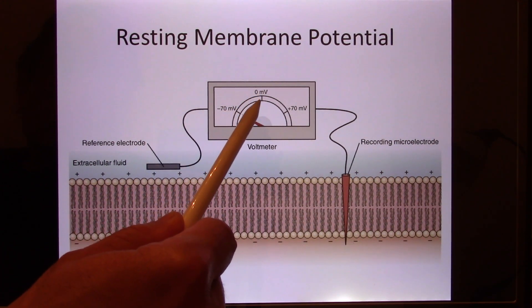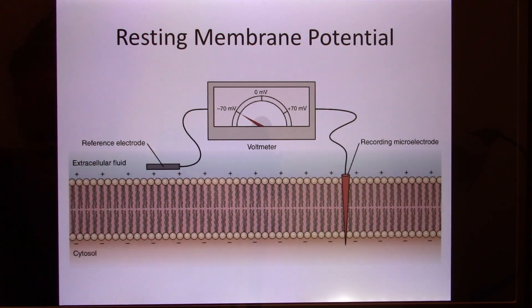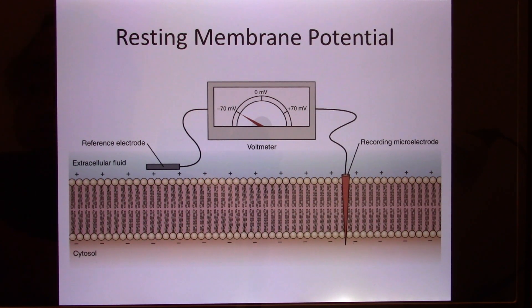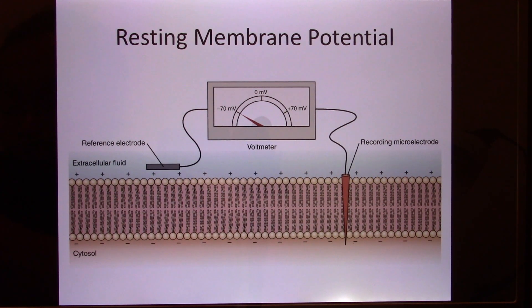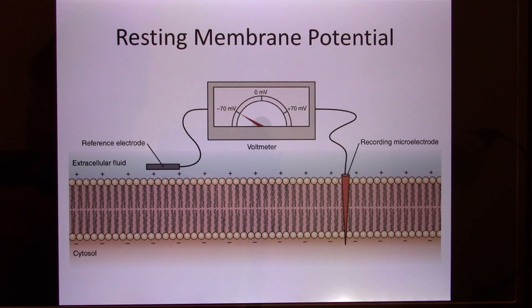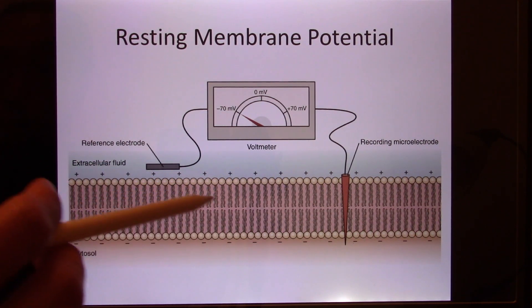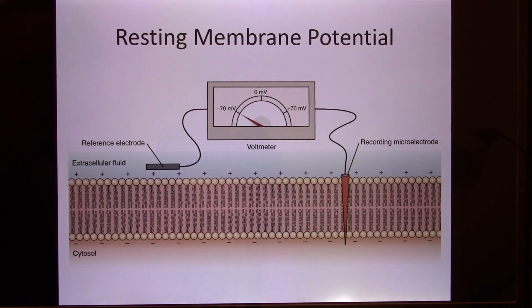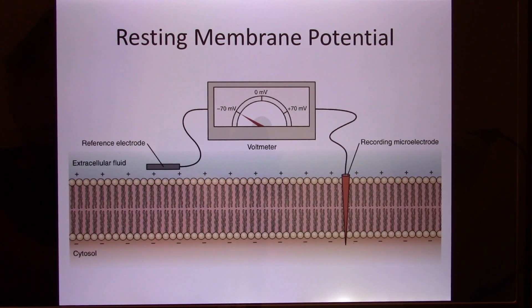Muscle and neurons are excitable — they're able to make the inside become more positive: minus 20, minus 10, or even plus 20. In this class, you'll learn how they're able to do that. For heart muscle especially, because the cells act together, those electrical signals can be recorded and we call that the EKG. If you're going into the medical field, you need to know the EKG. We'll cover the neuron in this unit and muscles later.